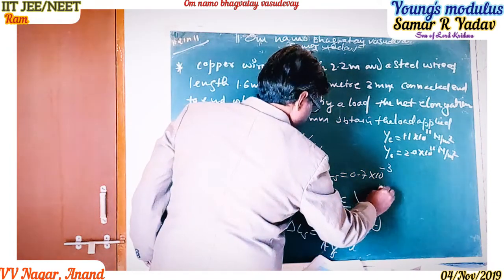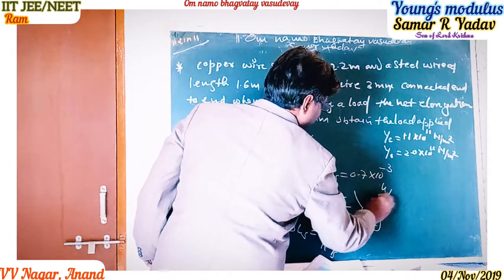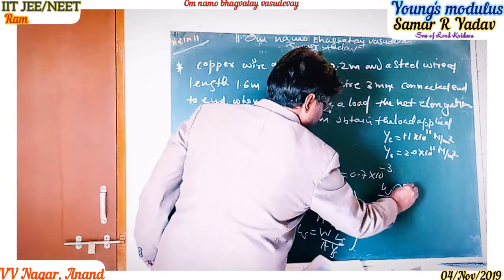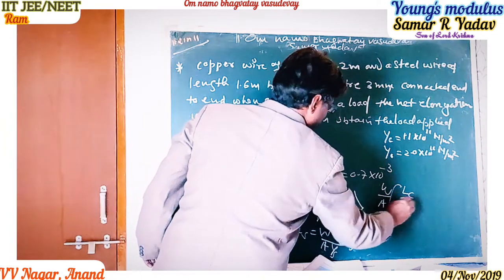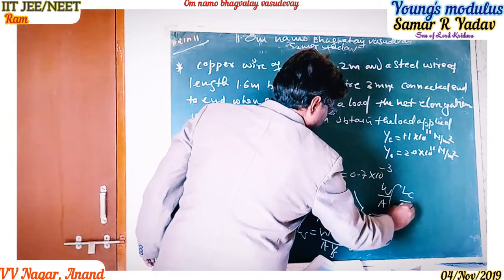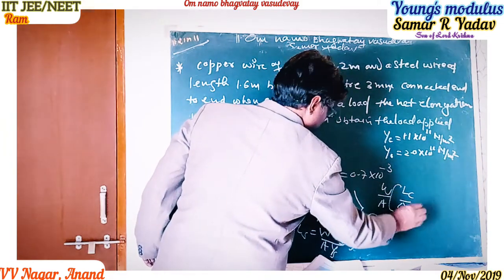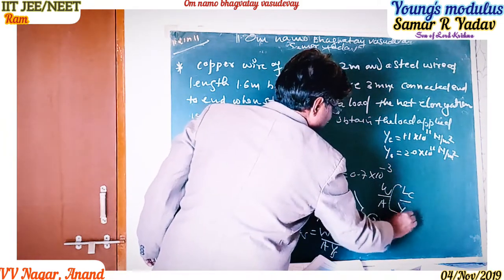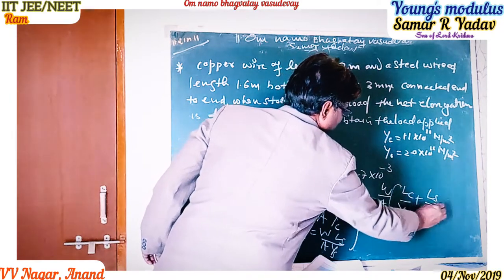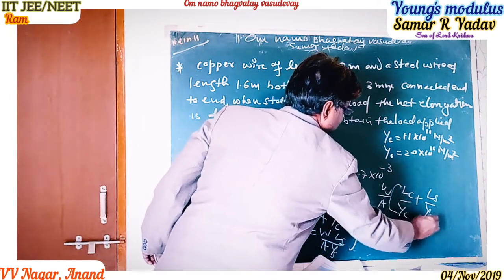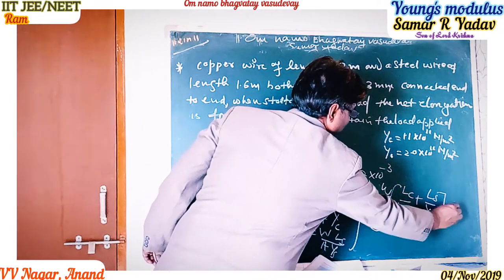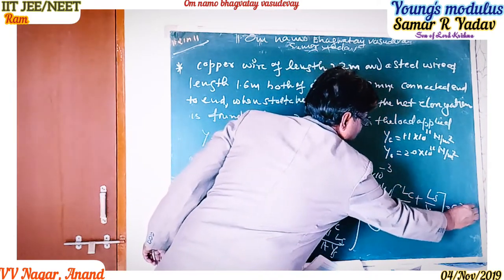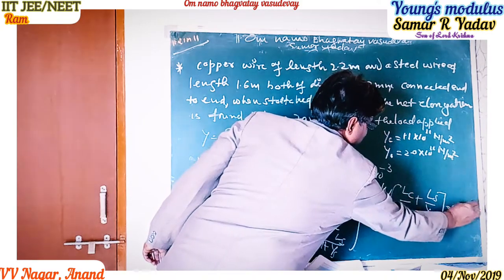Taking W upon A as a common factor, we can write: (L_c upon Y_c) plus (L_s upon Y_s) equals 0.7 into 10^(-3). This gives us equation number 2.